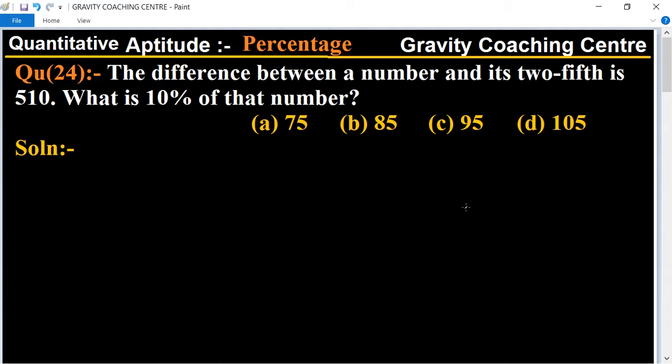This is a very simple question. First we'll let the number be x. According to the question, the difference between a number and its two-fifth equals 510.